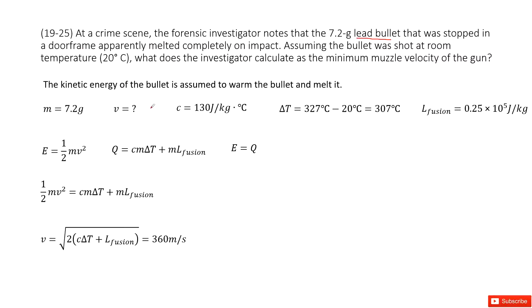So finally the speed is zero. When it stops, what happens? It melts on the door completely. We can consider this bullet was shot at room temperature, so the initial temperature is given. The question asks: what is the minimum speed of the gun? We need to find this.